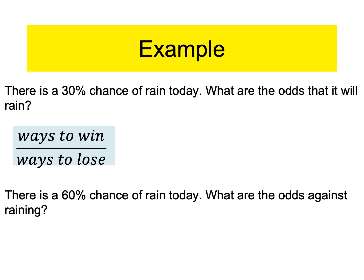Multiply top and bottom by 10 to clear the decimals, giving three over seven. In colon form: three to seven. What are the odds that it will rain? Three to seven — three ways to win, seven ways to lose. Not likely that it's going to rain.